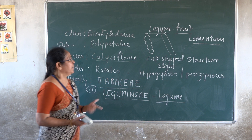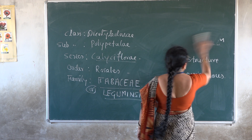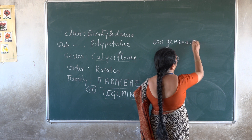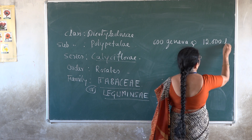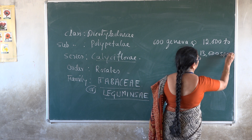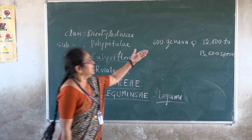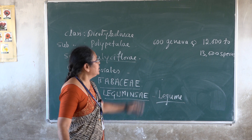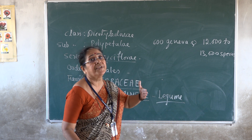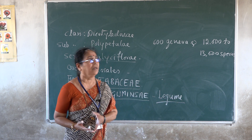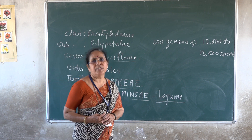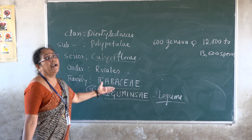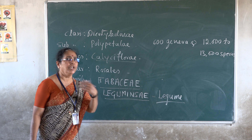Fabaceae is the second largest family, containing about 600 genera and about 12,000 to 13,000 species. We say 'about' because we cannot state the exact number definitively. It is one of the largest families of dicots. Let us continue with the general characters of family Fabaceae, and later with its classification into sub-families.